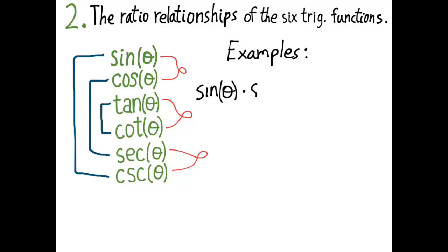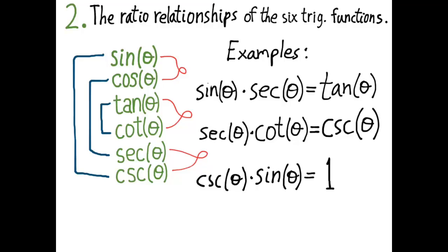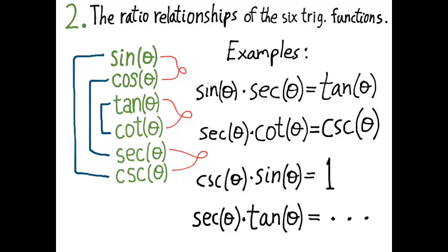Here's an example of how you could use these relationships: sine θ times secant θ equals tan θ. Secant θ times cotangent θ equals cosecant θ. Cosecant θ times sine θ equals 1. And if you're asked to simplify secant θ times tan θ, you can't really do that because nothing cancels out. So you need to understand how those examples work.